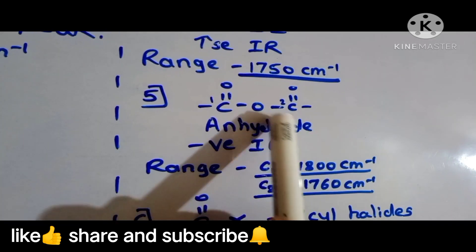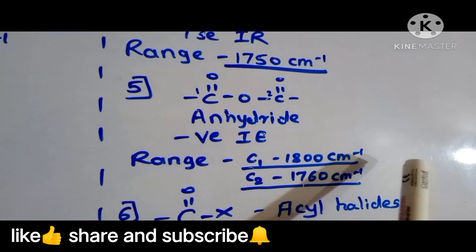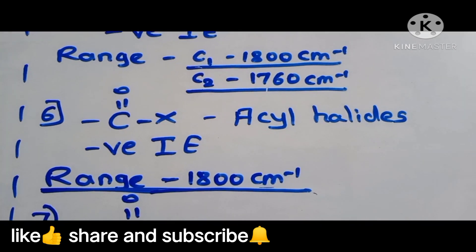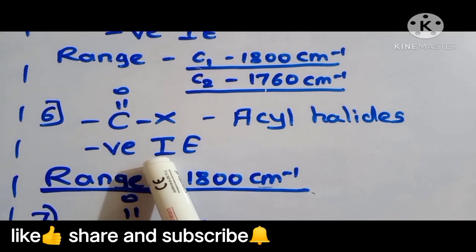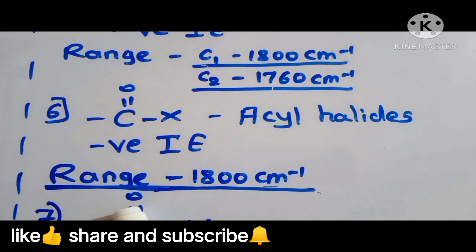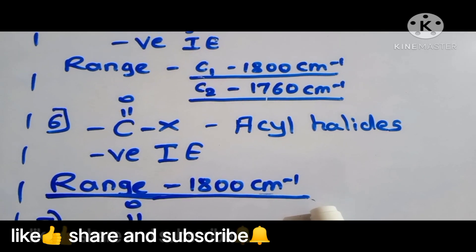The C1 carbon means this C1 carbon chain, what is the range? 1800 centimeter inverse. And C2 stretching bond is 1760 centimeter inverse. Sixth functional group is the acyl halides, acyl halides which shows negative inductive effect and range is 1800 centimeter inverse.